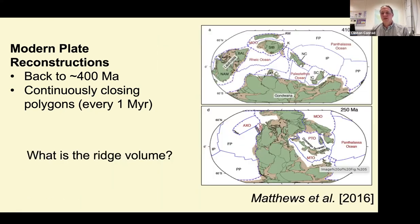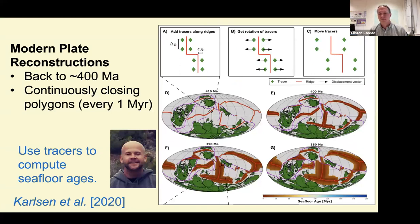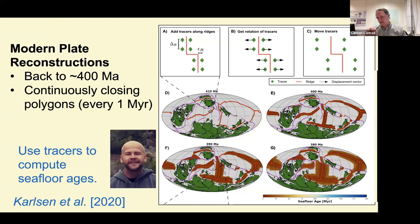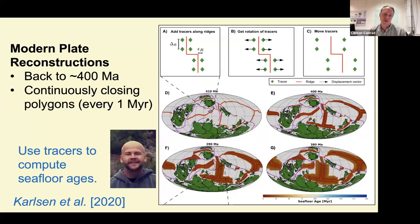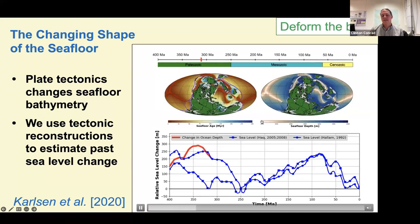One problem with tectonic reconstructions is that we don't have an indication of the bathymetry, which is what we really need to estimate sea level. One of my PhD students developed a way of taking a tectonic reconstruction and adding tracers to the surface plates, following them to calculate the age of the seafloor as a function of time. From the age of the seafloor, you can estimate the depth — the bathymetry. When he did this, he was able to calculate bathymetry and then sea level as a function of time.